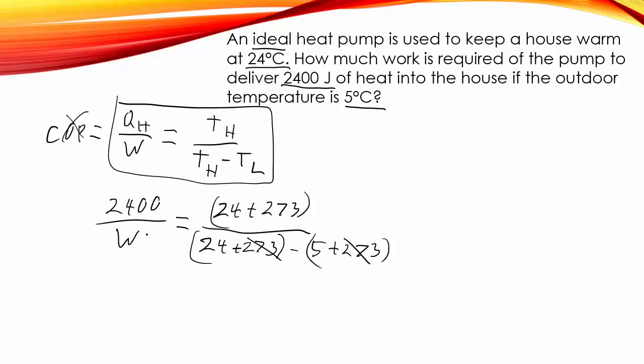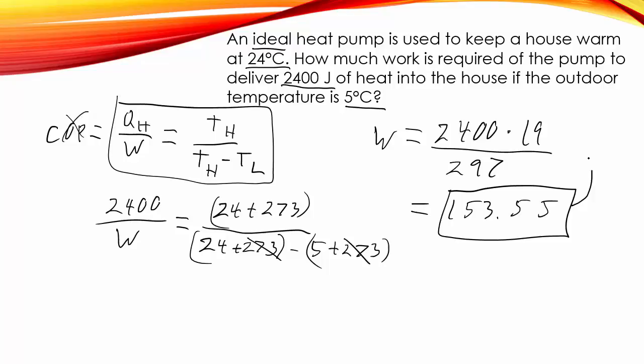Now, we've got this W downstairs, so the kind of shortcut for solving these types of algebraic expressions is to cross multiply and divide. So, W equals 2400 cross multiply, so I'm going to multiply that by 24 minus 5, which is 19. And then I'm going to divide it by 24 plus 273, so that was the same 297 that we saw in the previous problem. And we get a wonderful 153.5 joules, which is pretty amazing. That's all the energy it would take if we had an ideal heat pump to put that much energy of heat into our house.